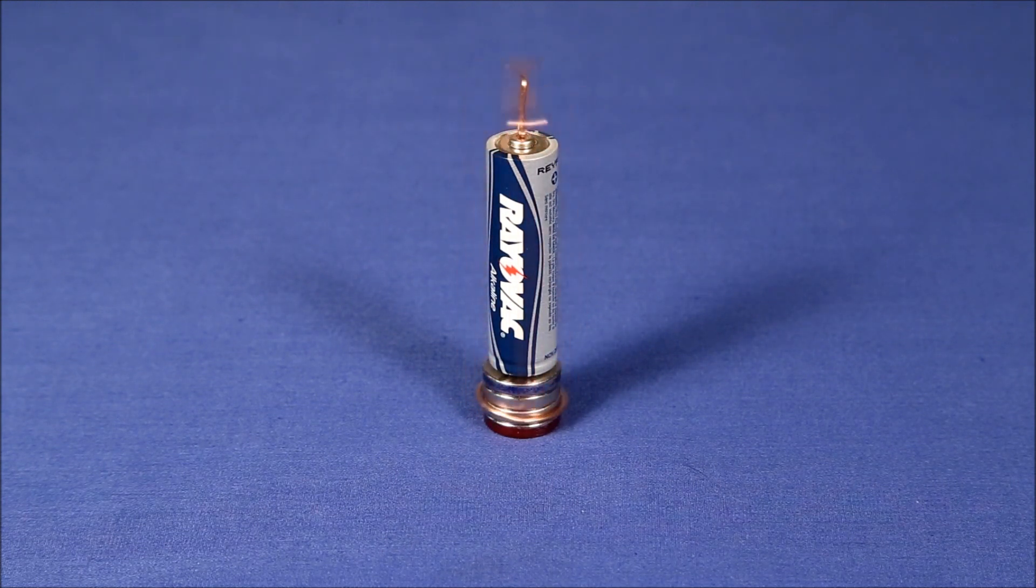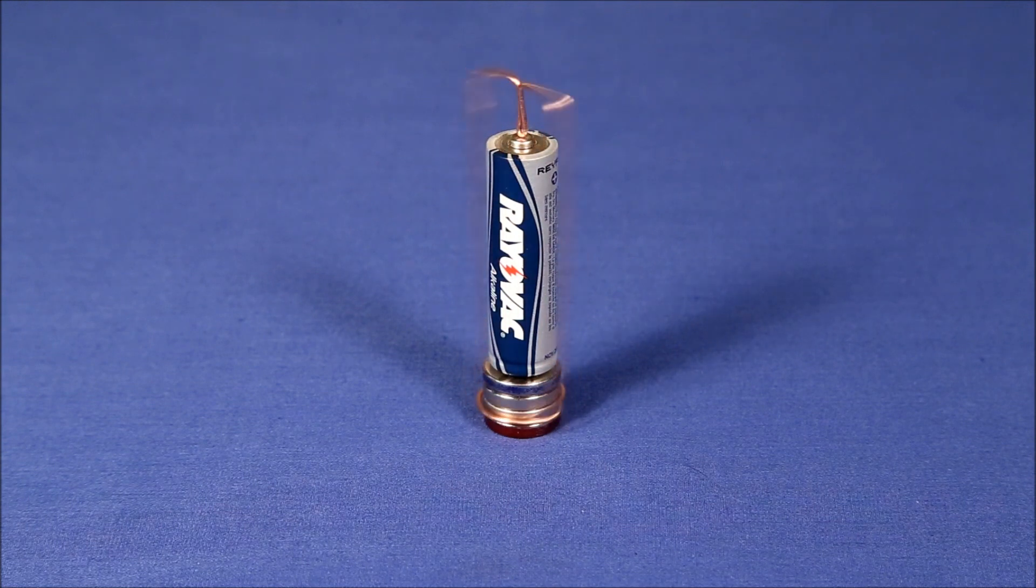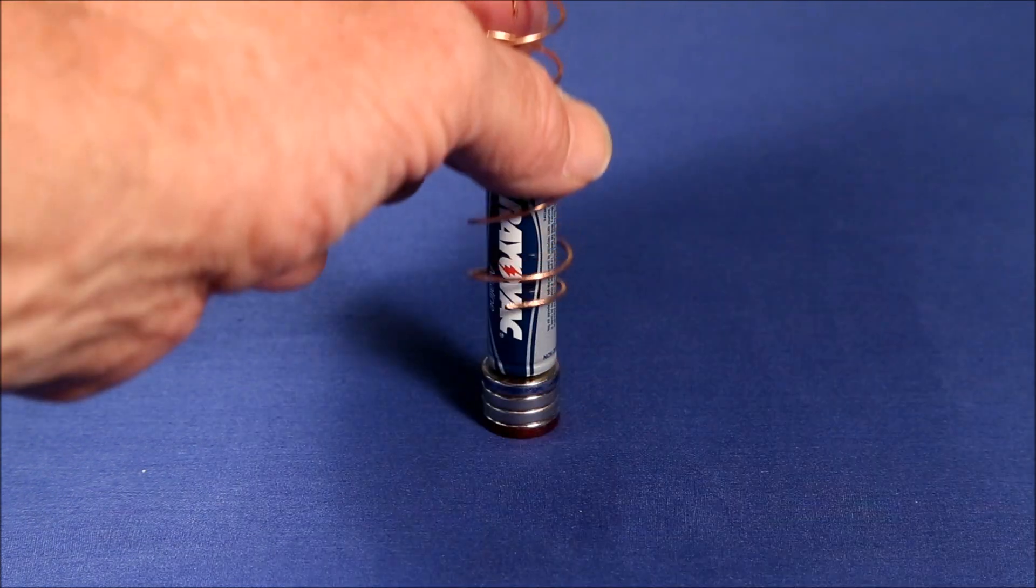Bending the bottom contacts to fit the contour of the magnets will help keep the armature running true.